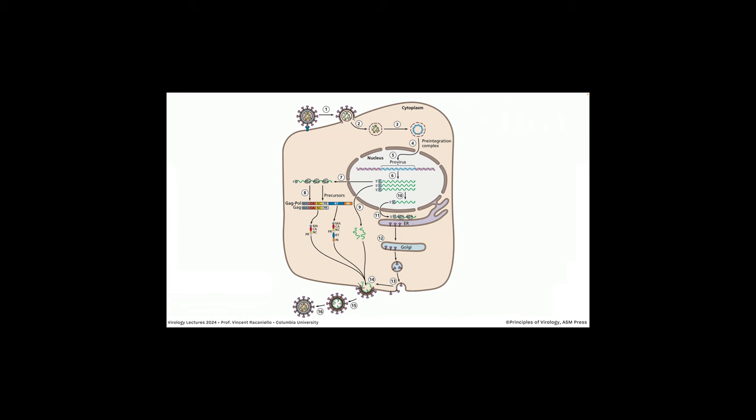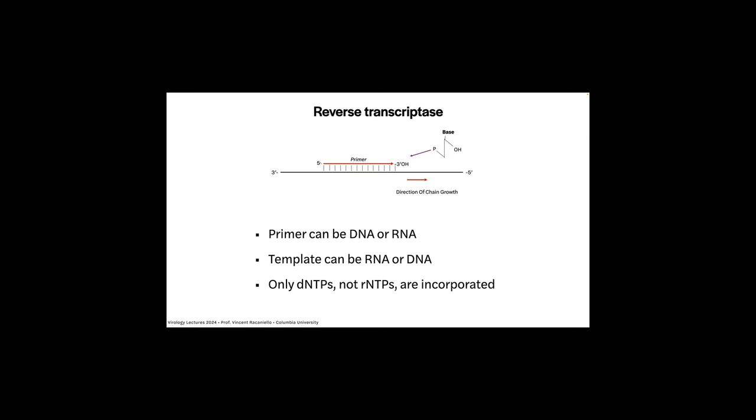When these viruses infect the cell, here's the overview. The virus binds to a receptor. Many of them fuse at the plasma membrane and dump the capsid into the cell. The icosahedral shell with the genome goes into the cytosol, and the genome never leaves the capsid — kind of like reoviruses. Reverse transcriptase in there converts the RNA into a double-stranded linear DNA molecule, which goes into the nucleus and integrates into the host cell chromosome. Now we call it a provirus. From there, mRNAs are made, which give rise to proteins that lead to the production of new particles.